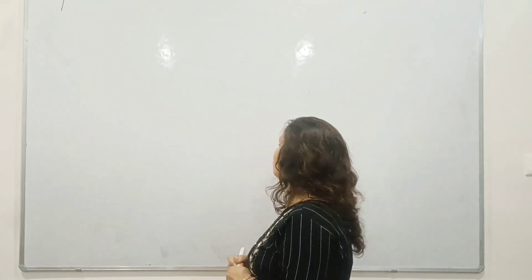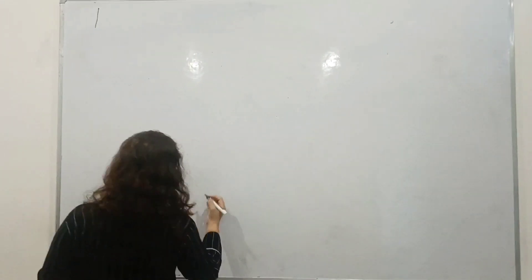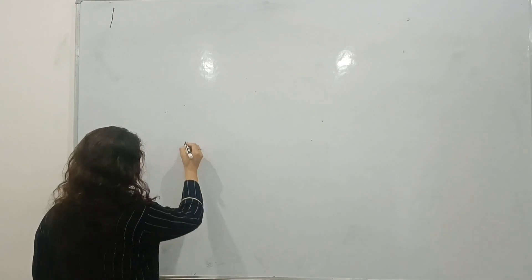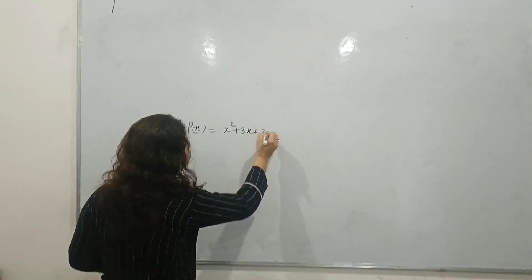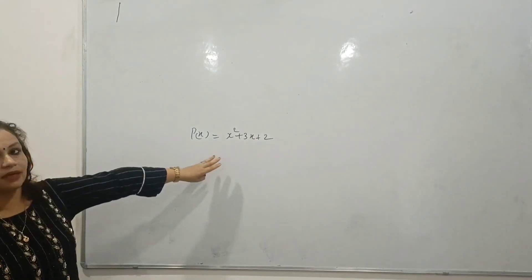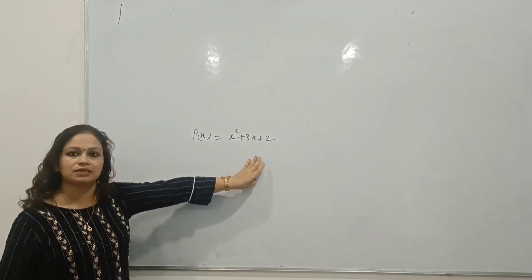So let's start the activity. First of all, we will assume any quadratic equation: x squared plus 3x plus 2. You can see that there are three terms: x squared, 3x, and 2.